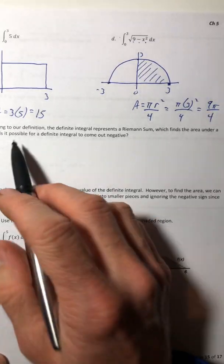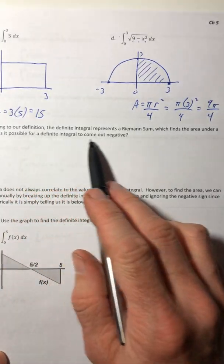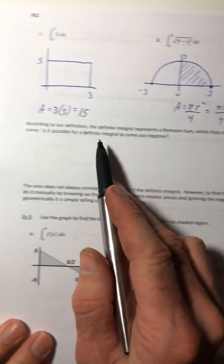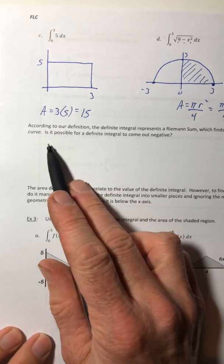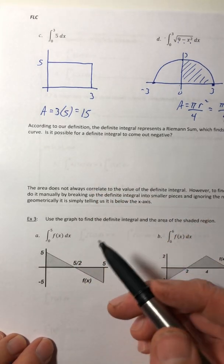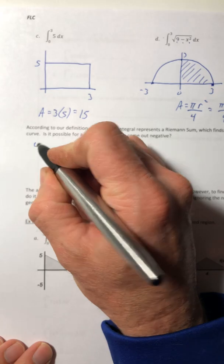So there you go. So according to our definition, the definite integral represents a Riemann sum, which finds the area under a curve. So is it possible for a definite integral to come out as negative? And the answer is yes.